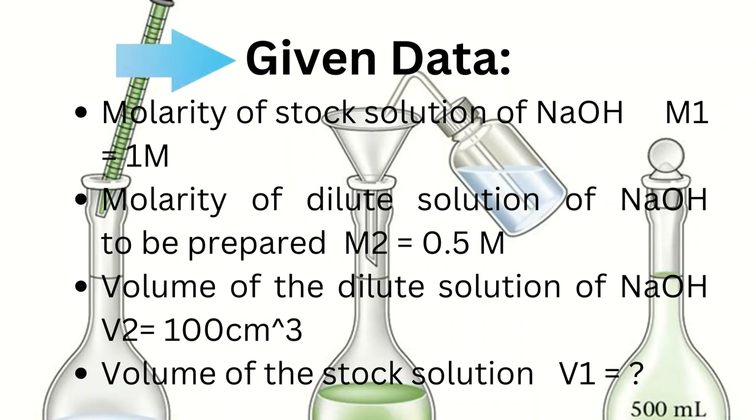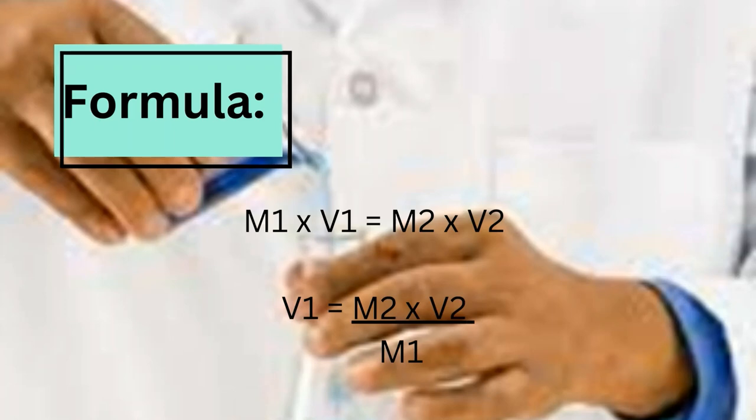Volume of the dilute solution of NaOH is V2 value 100 cubic centimeters, volume of the stock solution is V1 required.